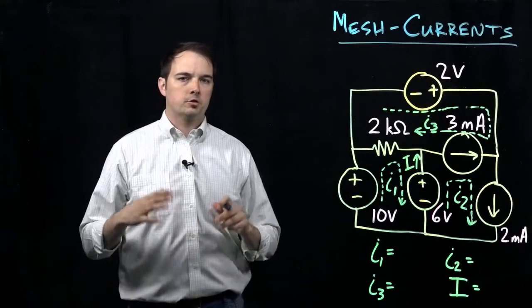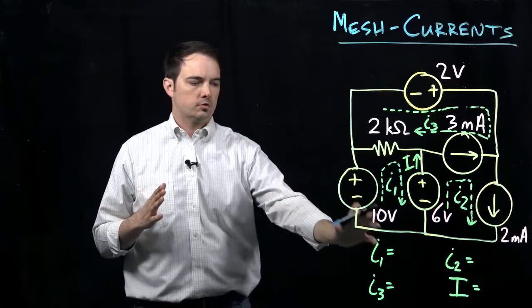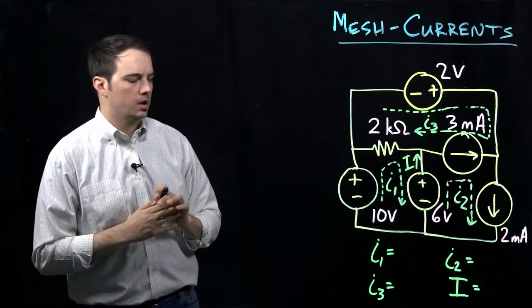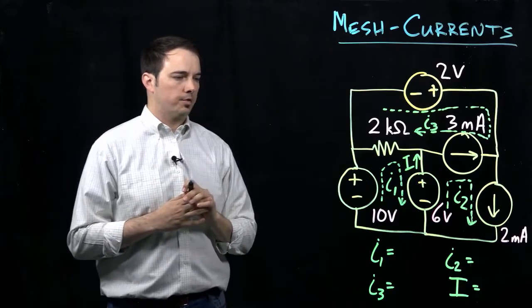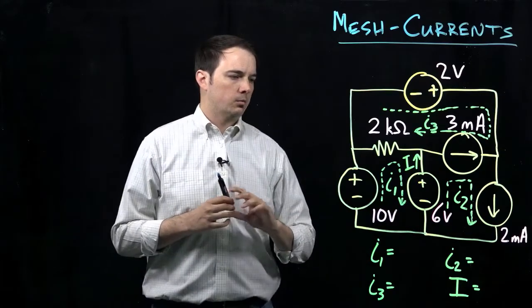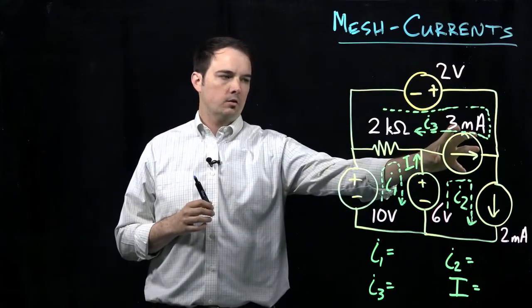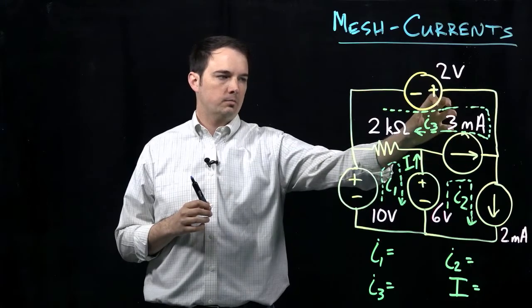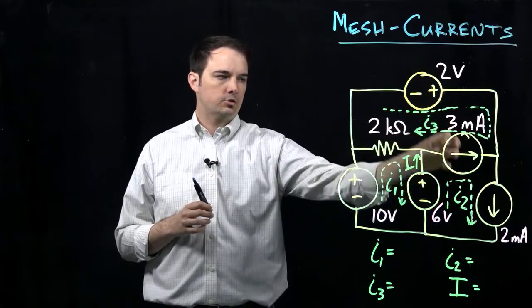Now when we start to examine the problem, we can make note of a couple of things. Number one is that we do see that we have a current source here that's tied between these two mesh currents, I2 and I3.